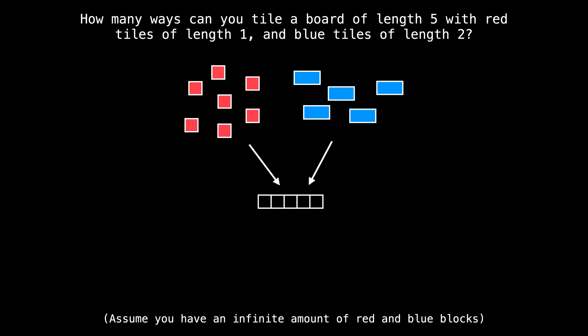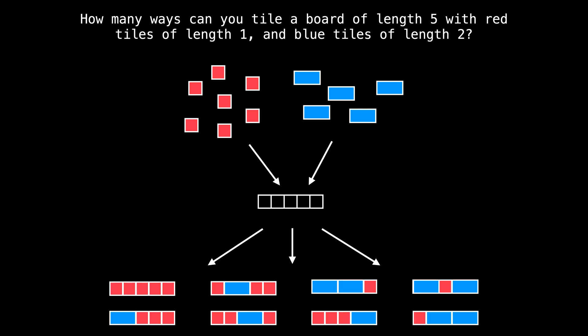The problem we are going to have a look at today involves trying to figure out how many ways you can tile a board of length five with red tiles of length one and blue tiles of length two. You can assume that there is an infinite amount of red and blue blocks at your disposal. As it turns out, for a board of length five, there are exactly eight possible tilings that you can make: a board filled with all red tiles, a board filled with one blue tile followed by three red tiles, a board with a red tile, a blue tile, and then two more red tiles, and so on.